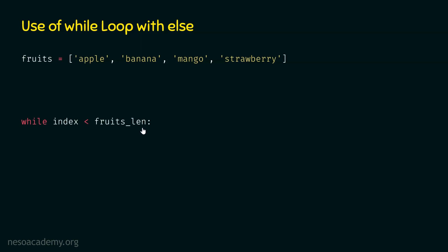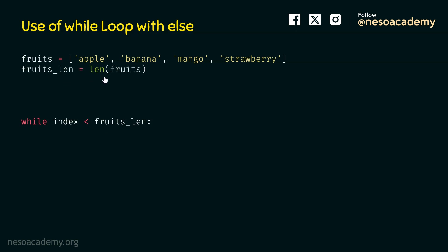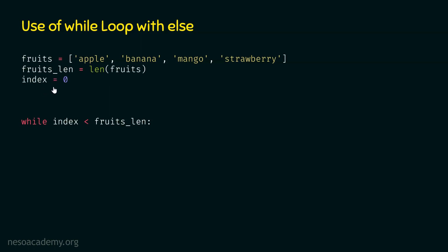fruits_length will hold the length of the list, and index will hold the current index. Initially, index will be zero and fruits_length will be four, because the length of this list is four. Let's create these two variables: fruits_length equals length of fruits, and index initialized to zero. So first, zero is compared with four. As zero is less than four, we will continue. Inside the while loop, we will check this condition: if fruits[index] equals orange.